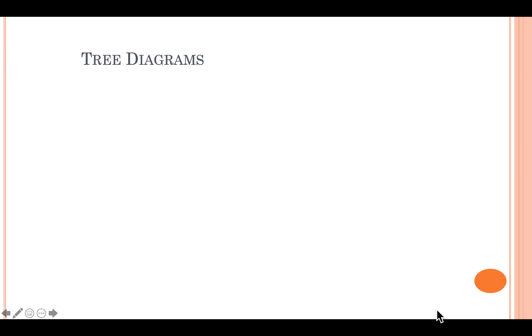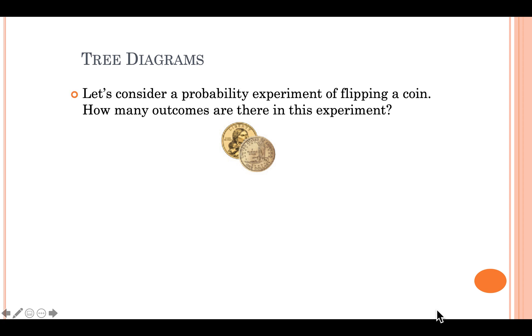We are now going to demonstrate how to build a tree diagram for a probability experiment. Suppose we have a coin with two sides, and we are going to consider a probability experiment for flipping this coin. How many outcomes are there in this experiment?